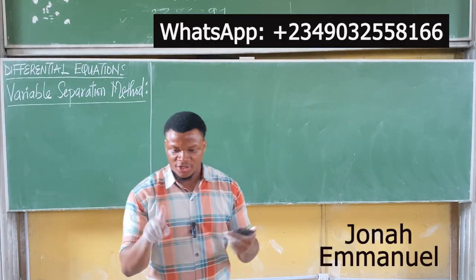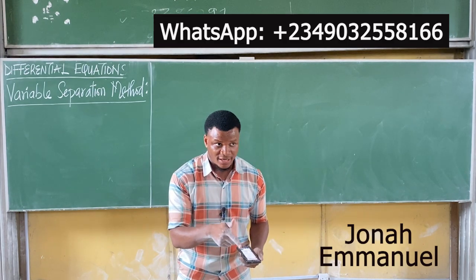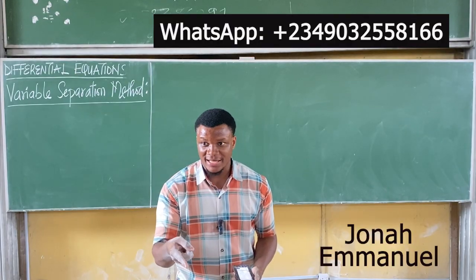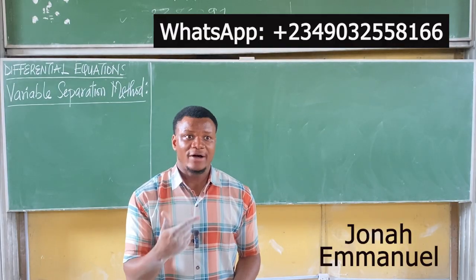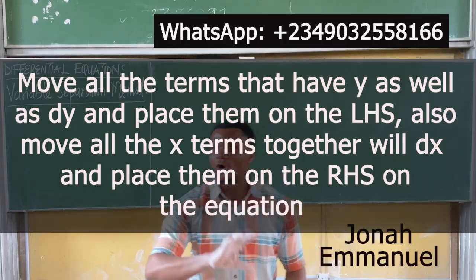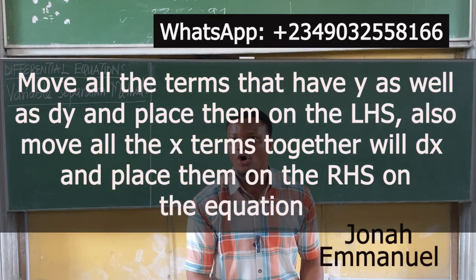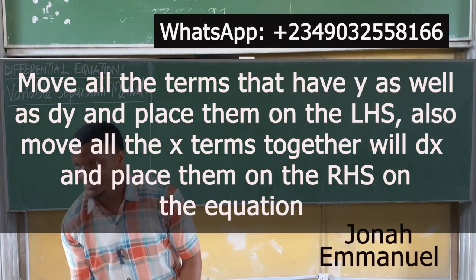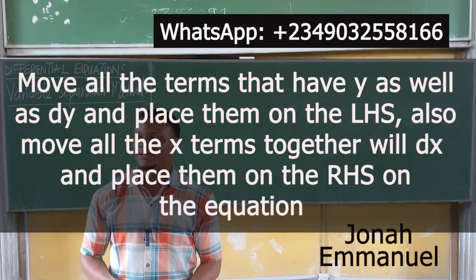So if they give you a question and you look at it — if it's just x and a constant, it's direct integration. If you see x and y, you know it's not direct integration. It could be variable separable. But how do you know? You go ahead and look for a way to separate them. Move all the terms that have y to dy and place them on the left-hand side of the equation. Move all the x-terms together with dx to the right-hand side.